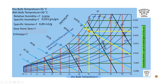Now we have to find dew point temperature. We draw a horizontal line from the intersection point until it intersects the dew point temperature scale. This value is between 25 and 30, so it is about 28 degrees Celsius. That is the dew point temperature.